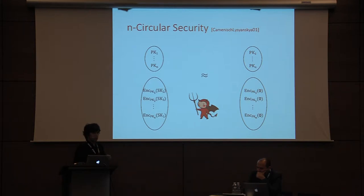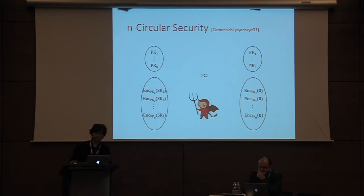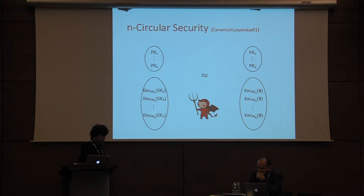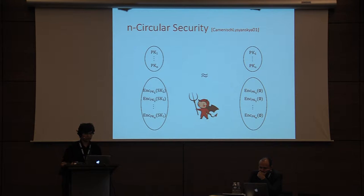You might ask why n-circular security is important or if it has any good applications. The most well-known application is Gentry's bootstrapping: Gentry showed that if a leveled homomorphic encryption scheme is circular secure, then it can be bootstrapped to be a fully homomorphic encryption scheme without any level bound.